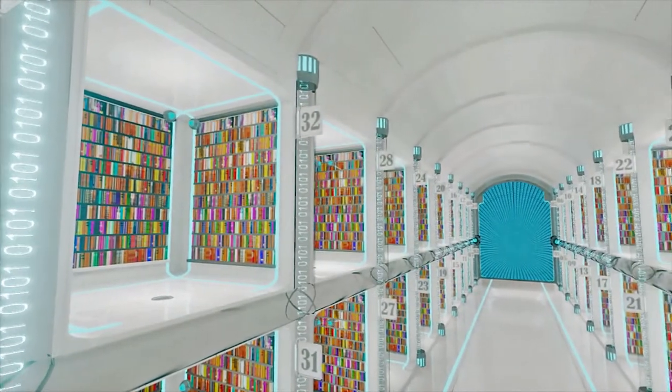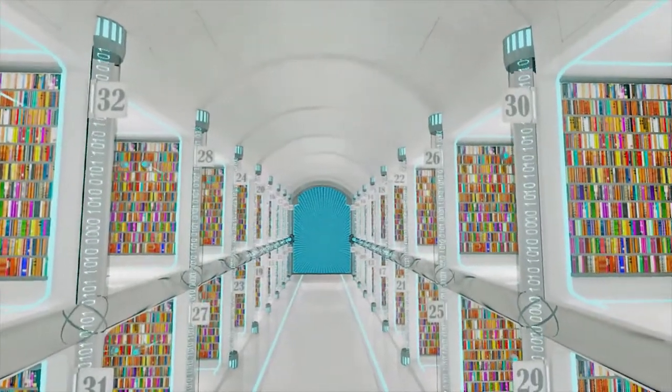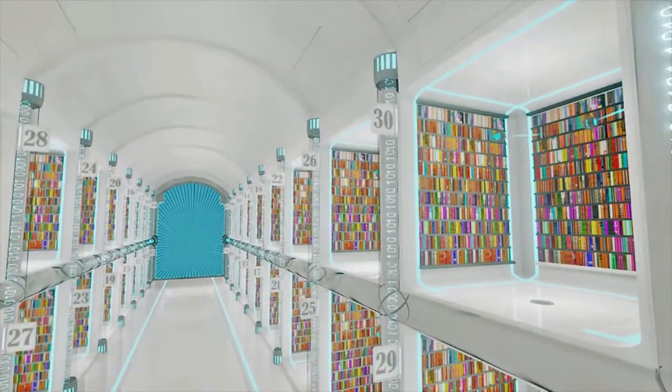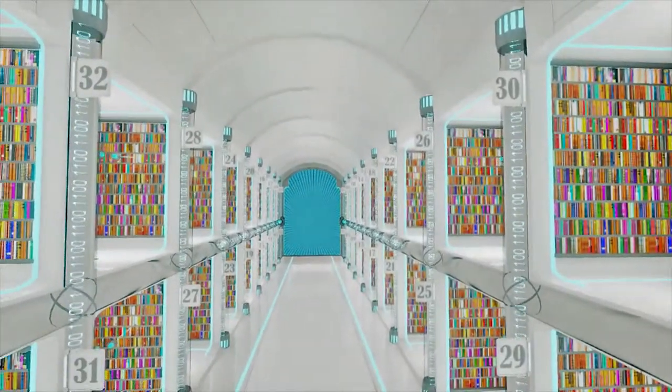As you can see, this is a library built for a 32-year-old client. Each section represents one year. Each book represents a series of events. The library is tailor-made according to the client's age.